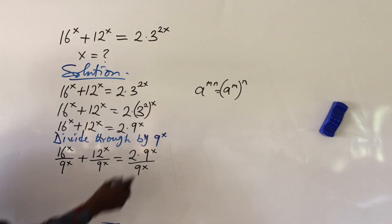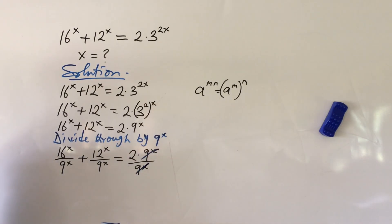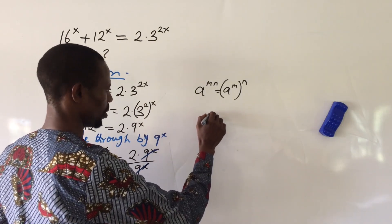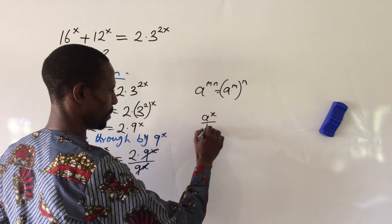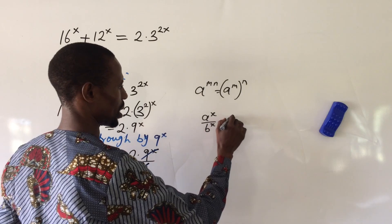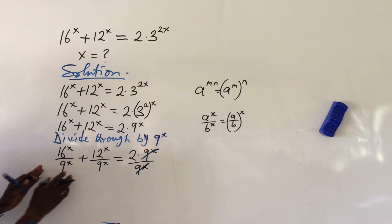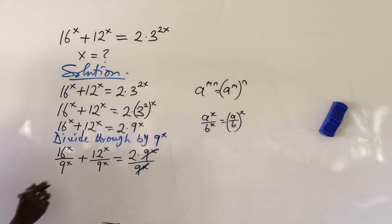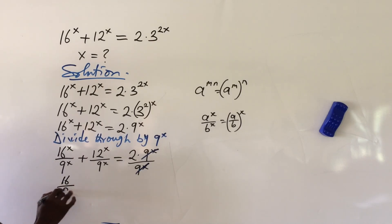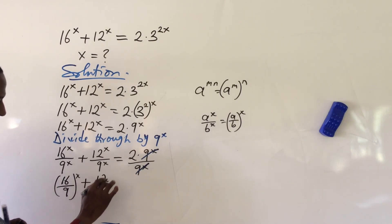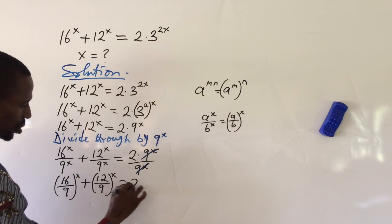At this point the numerator cancels the denominator on the right, leaving just 2. Now we can rewrite this expression because according to the law of indices, a^x over b^x is the same as (a/b)^x. So we rewrite as (16/9)^x plus (12/9)^x equal to 2.